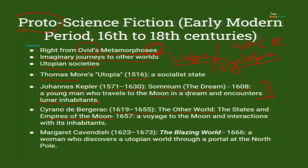So you see how from a dream it turns into an actual voyage — the transition, the evolution of the idea. A voyage to the moon and interactions with its inhabitants — the same trope, but this time it is not a dream anymore; it is a reality. Margaret Cavendish, 1623 to 1673, lived for only 50 years and wrote a wonderful book called The Blazing World, published in 1666. There she talks about a woman who discovers a utopian world through a portal at the North Pole. Some people strongly claim it is a feminist text and she is one of the earliest feminist science fiction writers.